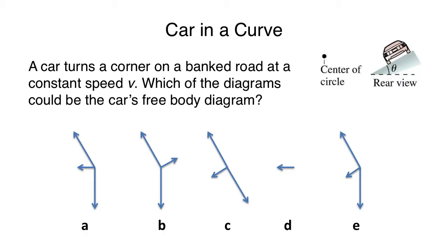Which direction is the weight on this object? Always down. So that immediately kills C and D. Which direction is the normal force in this problem? It's pushing from the ramp onto the car, so it's going to be up and to the left. Now we have to sit back and imagine for a second the motion that would happen.